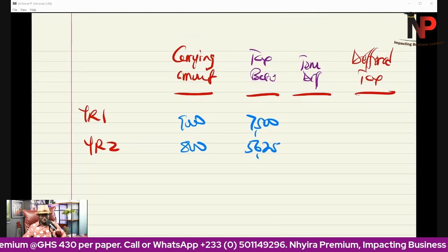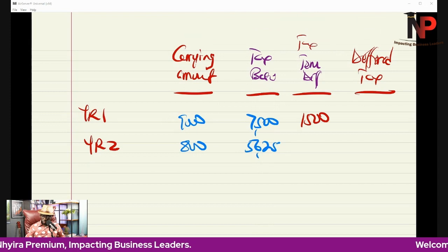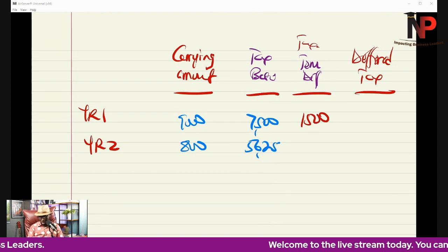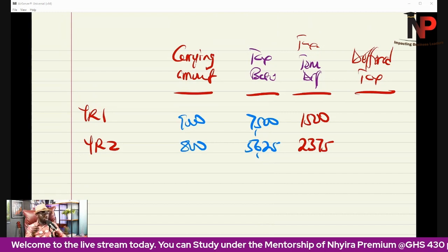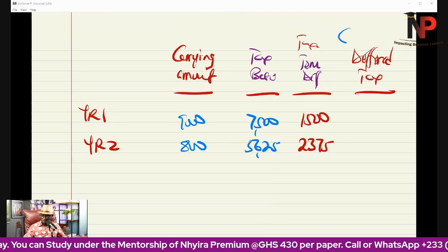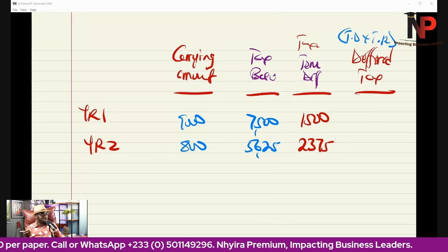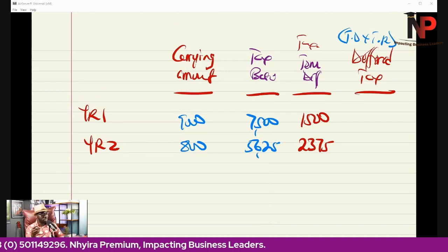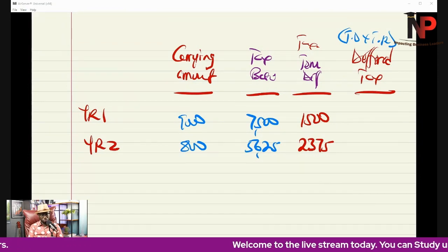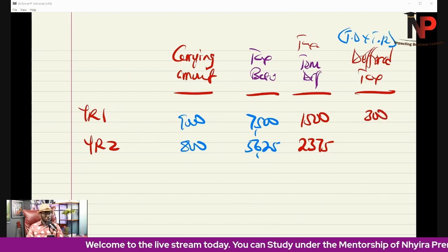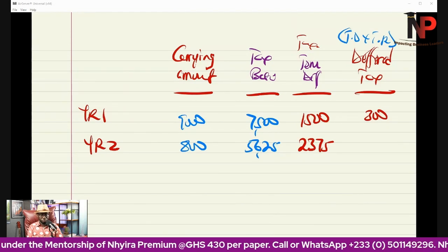The difference between the two gives us the temporary difference. Year one: 9,000 minus 7,500 equals $1,500 — a positive figure, so it is a taxable temporary difference. Year two: 8,000 minus 5,625 equals $2,375 — also a taxable temporary difference. To get the deferred tax, multiply the temporary difference by the tax rate. So 1,500 × 20% = $300 for year one, and 2,375 × 20% = $475 for year two.